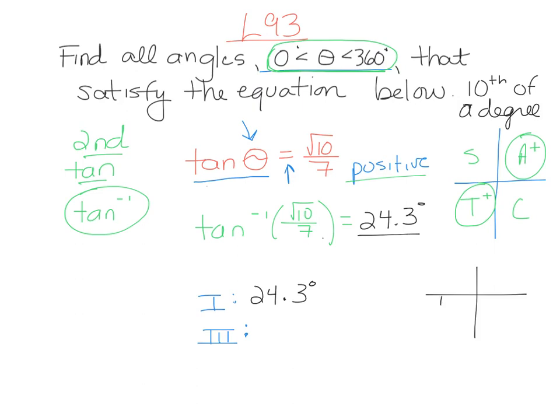To get my third quadrant answer, I'm going to use the 24.3 as a reference angle like we learned about in the last lesson. So for the third quadrant, that means I'm taking 180 plus 24.3. So that's going to give me 204.3 degrees. And those are my two answers. Now, to check this work, if I type the tangent of 204.3, I should get something really close to whatever decimal radical 10 over 7 gives me. Both of these answers should give me that same value of tangent around radical 10 over 7.